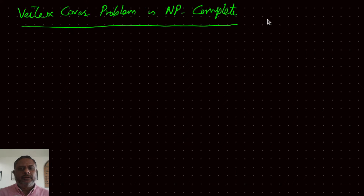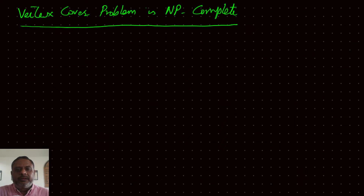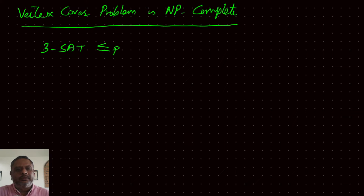Hi friends. Now let us try to prove that the vertex cover problem is NP-complete. As seen in previous sessions, this can be easily done by reducing it from a known NP-complete problem. The well-known NP-complete problem is the 3-SAT problem. And if we can reduce this 3-SAT problem into our vertex cover problem, then we can claim that vertex cover problem is NP-complete. For it to be NP-complete, two conditions are required. One, it should be an NP problem.